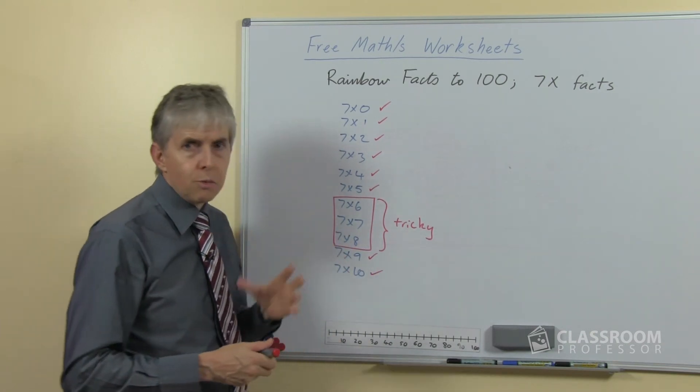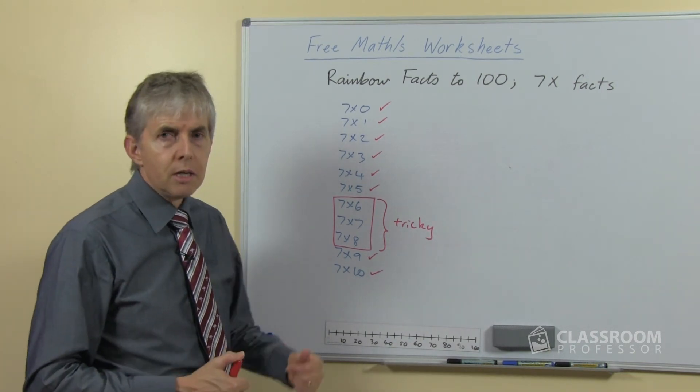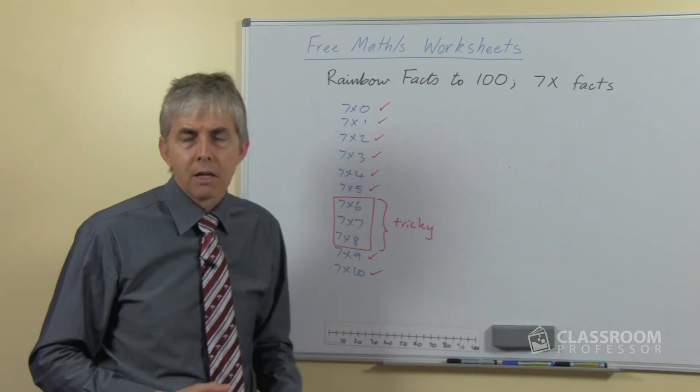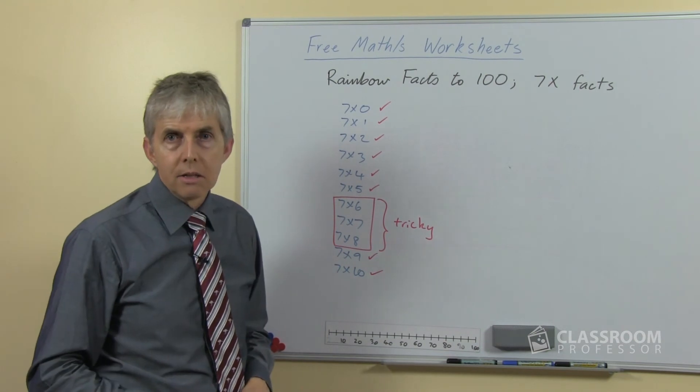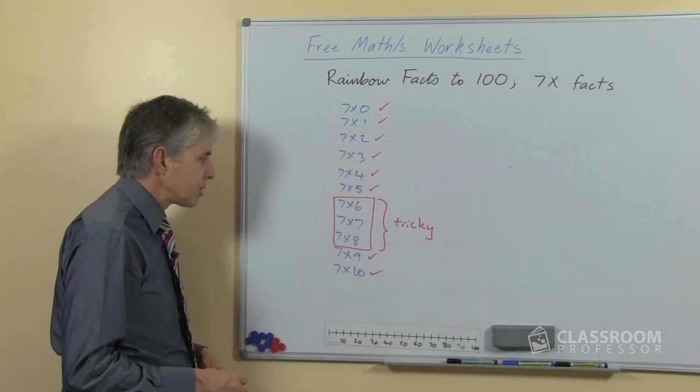I remember telling students when we had number fact competitions regularly each week, that if I wanted to trip them up, if I wanted to give them the hardest number fact I could think of up to ten times ten, that was seven times eight. And so they all went home and learned that particular number fact, which of course was a benefit to them.